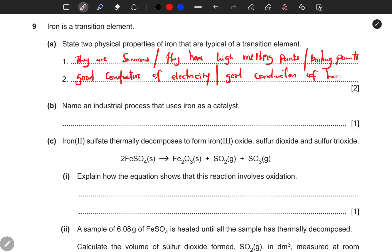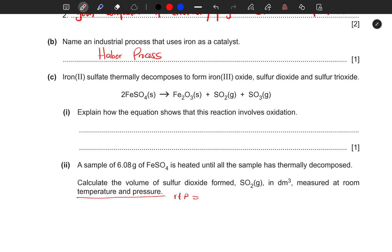You can see, iron(II) sulfate thermally decomposes to form iron(III) oxide, sulfur dioxide, and sulfur trioxide. You can see the equation. Explain how the equation shows that this reaction involves oxidation. Number one, oxygen is being gained. Another one is that oxidation also deals with the loss of electrons.